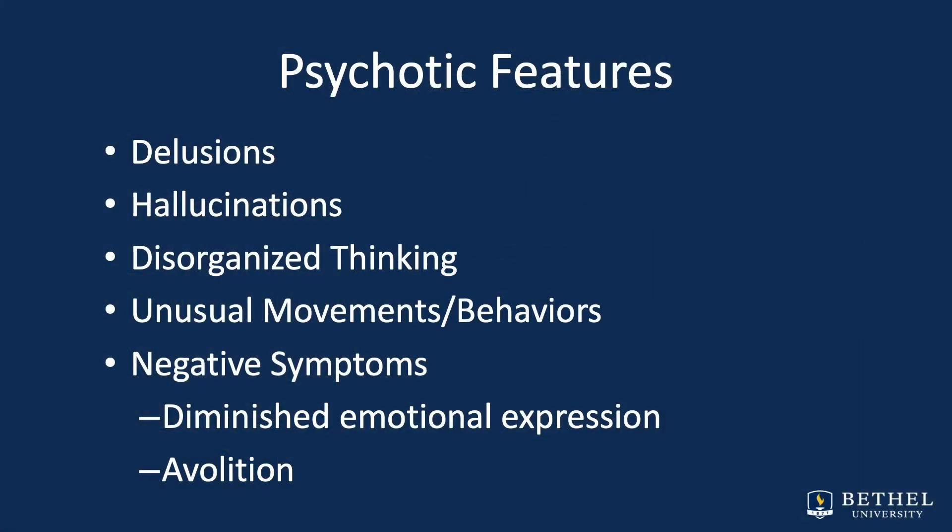Diminished emotional expression is another feature we see in schizophrenia. The DSM indicates this includes reductions in the expression of emotions in the face, eye contact, intonation of speech, and movements of the hand, head, and face that normally accompany emotional expression while speaking. Avolition is defined by the DSM as a decrease in motivated, self-initiated, purposeful activities. You will cover these and more as you progress through this module.